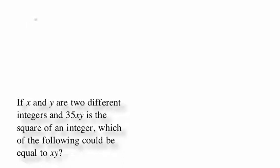If x and y are two different integers and the product 35xy is the square of an integer, which of the following could be equal to xy?